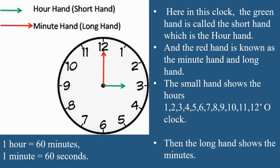So, once again students, you can see in this clock: the long hand, which is in red color, is the minute hand, and the short hand, which is in green color — yes, very good — that is the hour hand.